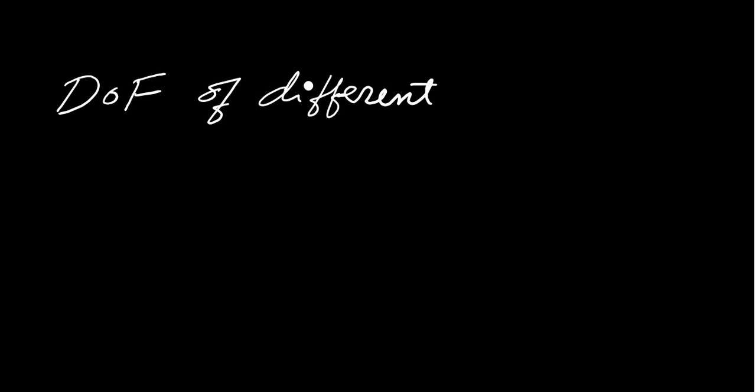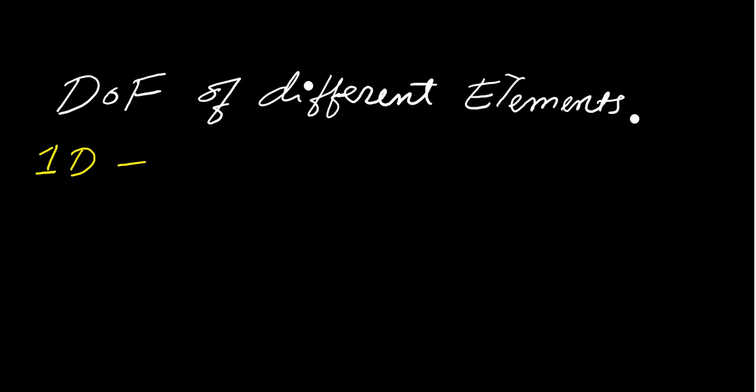Here we will understand the degree of freedom of different elements. As you know, there are different types of elements in FEM. First, you will have the 1D bar element, that is, a one-dimensional element. In a 1D bar element, the different elements will be the bar or the truss.